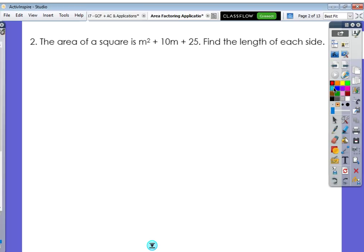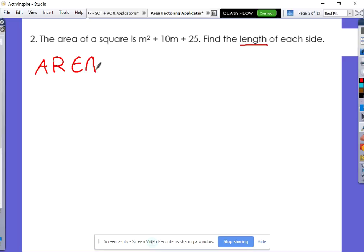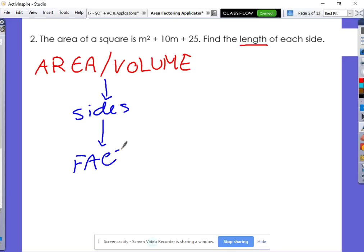So I want to do a couple examples with you guys very quickly here. Jump on that sheet down to number 2 and look at this question where it says the area of a square is m squared plus 10m plus 25. So let's find the length of each side. Pretty much any time you see in a question that it says area or volume, if you see the words area or volume, you're then going to basically say if I want to know the sides, the only way to find the sides is to factor.